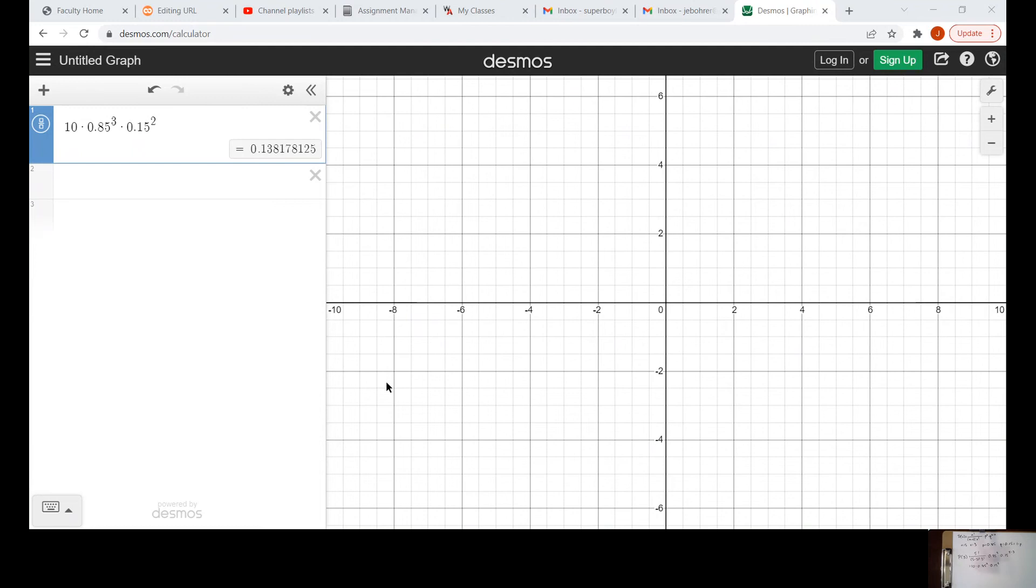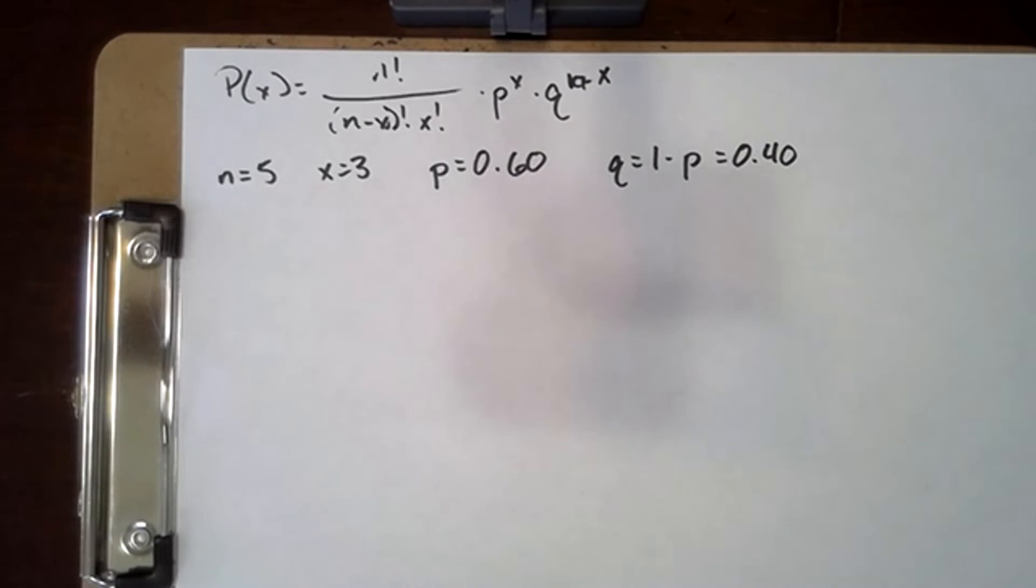Instead we are going to look at how to do this using the formula. So coming back here, here is our formula again. And here are our values for n, x, p and q. We've got n is 5, x is 3.